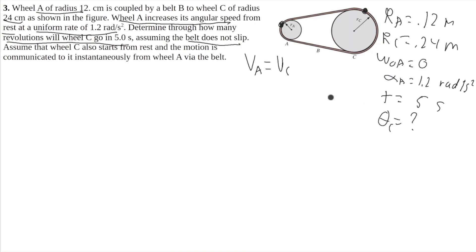To find theta C, I'm going to use a rotational dynamic equation. It'll be theta C equals omega naught C times T plus one-half alpha C T squared. Now omega naught C is going to be 0 because it starts from rest, so theta C will equal one-half alpha C T squared.